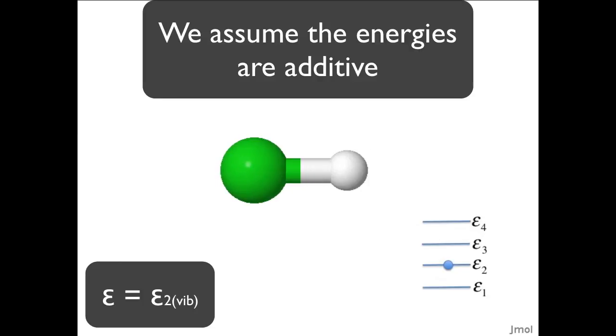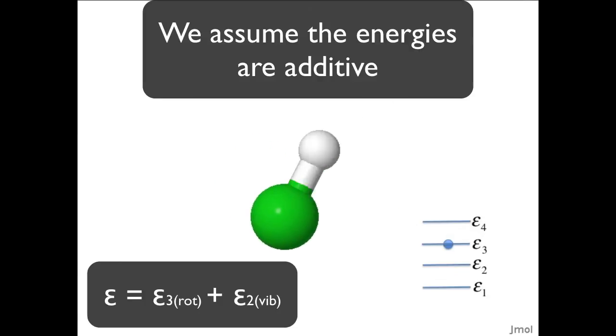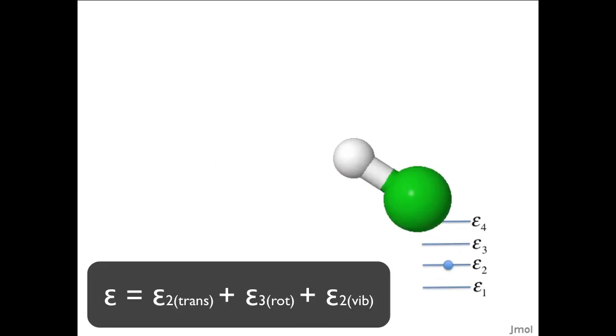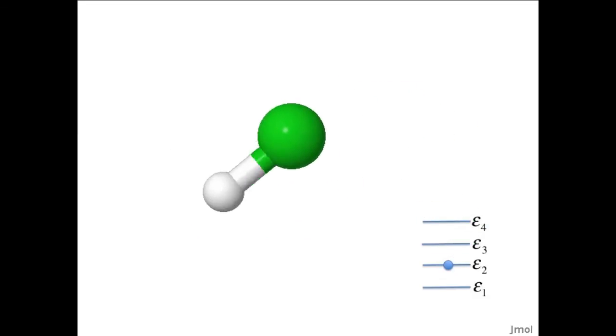We can combine these things. We can assume—that's an approximation—but we can assume they're additive. A molecule has vibrational energy, rotational energy, and translational energy. We assume these are additive, and this allows us to describe complex motion.